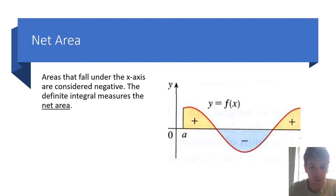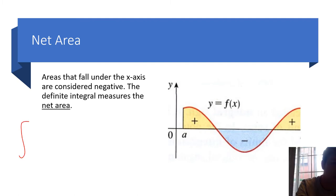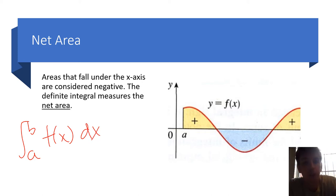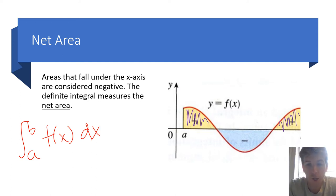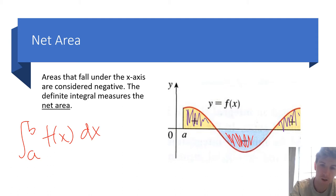The definite integral from a to b of f of x dx gives us what's called the net area. Regions that are above the x-axis, like in the picture over here, are considered positive. And the regions that are below the x-axis are considered negative.